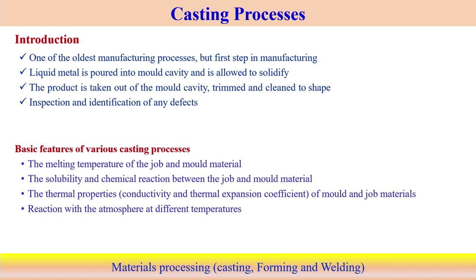Once we follow all these steps, we try to check and inspect to investigate whether there is any kind of defect available in the cast component or not. That final checking of the component is usually done. The basic features of the casting process are associated with, first, how to melt the material — because there are so many issues when you try to melt the material. One example is that when you try to melt the material, there is a possibility of entrapment or dissolving of gas with the liquid metal. When gas becomes entrapped in the liquid metal, during solidification it will try to create some kind of defect, so we have to be very careful when we are melting the component.